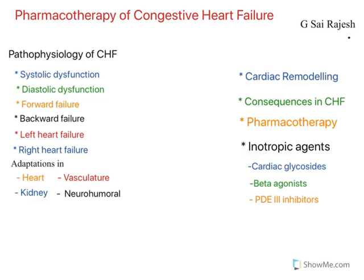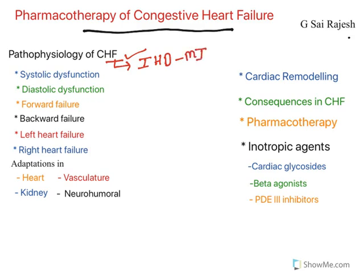Hello everyone, welcome to the class on pharmacotherapy of congestive heart failure. In the previous class I explained about pathophysiology of congestive heart failure. The primary reason for heart failure is ischemic heart disease. It may result in myocardial infarction which results in cardiac muscle death, causing heart failure. When the heart fails, its ability to pump blood is lost, resulting in congestion of blood inside the heart — hence it is known as congestive heart failure.